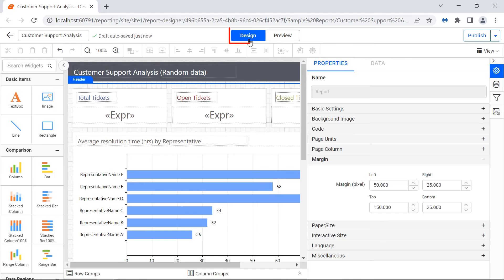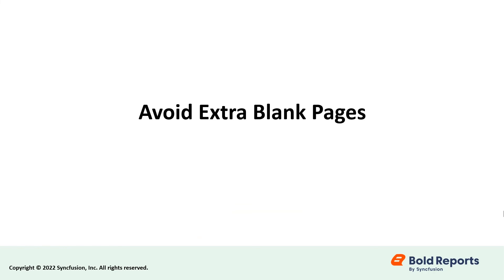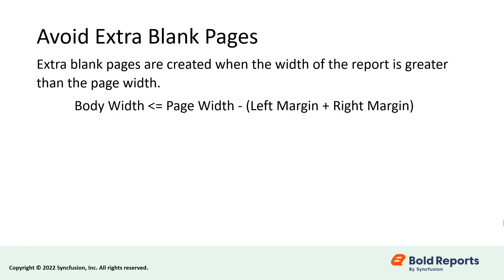To avoid this, click the design button and change the left margin to 25 pixels and top to 25 pixels. Let's see how to avoid extra blank pages in print and print preview. Extra blank pages are created when the width of the report is greater than the page width. To avoid this, set the report body width lesser than or equal to the page width. The body width should be less than or equal to page width minus the sum of left and right margins.